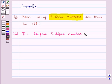The largest 5-digit number is equal to 99,999.